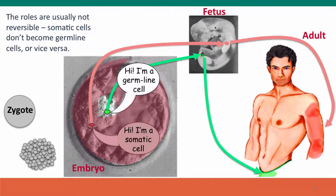The roles of somatic and germline cells are usually not reversible. Once a cell is committed to being a germline cell in an animal, it's not going to go back and become a somatic cell, and somatic cells in an animal normally cannot become germline cells. The new study of pluripotent stem cells may provide ways to do this, but this certainly is not something that normally happens in normal development.